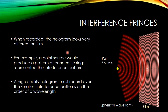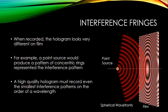To get an idea of how these interference fringes look, consider the light coming from a point source, which produces spherical wavefronts. If we look at the interference of a plane wave with these spherical waves, we get a bullseye pattern. A high-quality hologram has to record very, very small interference patterns in order to reconstruct the original wavefronts. A point source is as simple as we can get — a more complicated object will have a more complicated interference pattern.